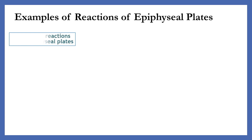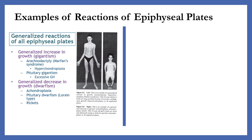Examples of reactions of epiphysial plates. Generalized reactions of all epiphysial plates. First is generalized increase in growth, such as pituitary gigantism, due to excessive growth hormones. The other is generalized decrease in growth or dwarfism, such as in achondroplasia, pituitary dwarfism, or cretinism, and rickets.